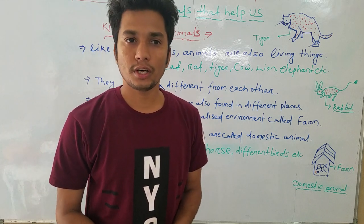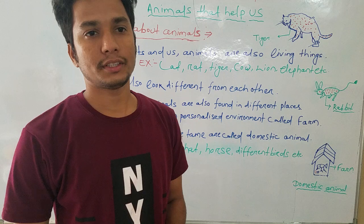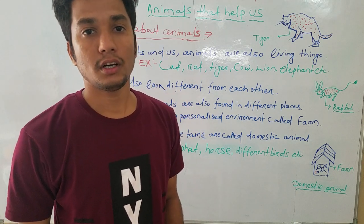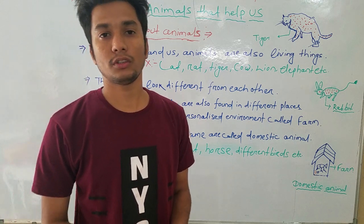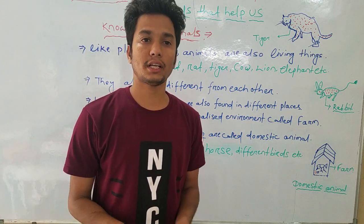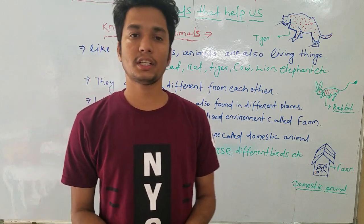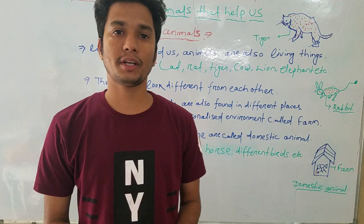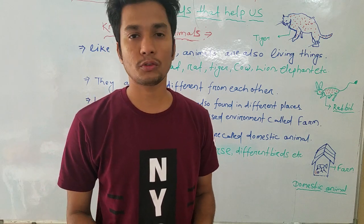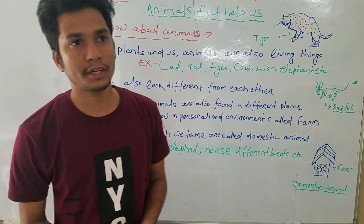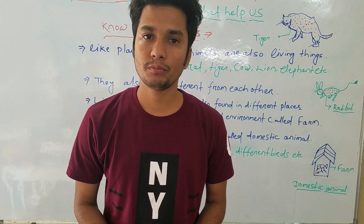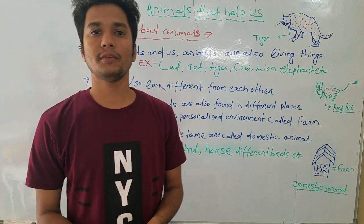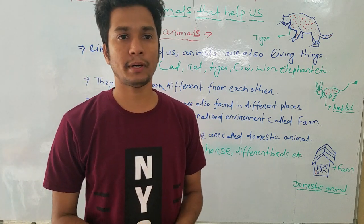Today we are going to learn a new chapter about how animals are helpful for us, just like plants are very important to our lives. We also studied that plants are of different types — small plants and big plants. You can see different kinds of plants in our environment.